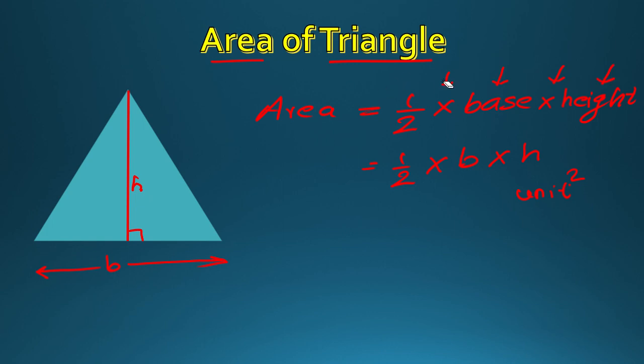So this is the basic formula for area of triangle: half times base times height. If you memorize this formula, it will be very good for you in the exam. Now let's see some questions based on this.